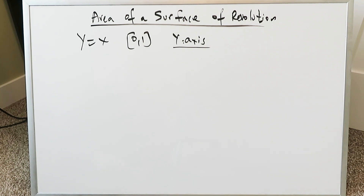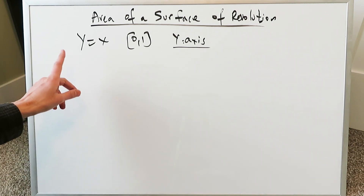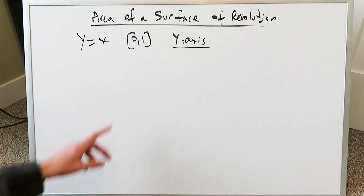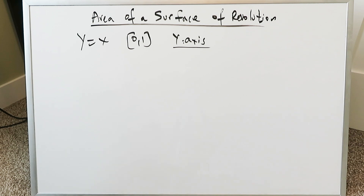Good afternoon, I am Mr. Ish. Let's continue here with this topic on the area of a surface of a revolution or a rotational solid. The first question here: y equals x, from 0 to 1 in terms of the x intervals, and then we are rotating that curve around the y-axis. Remember, we're not doing volume determinations here, we're doing surface area determination.